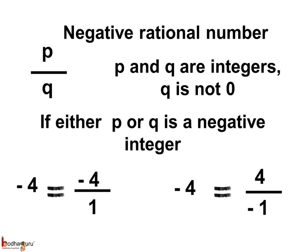So, here, minus 4, which can be expressed as minus 4 by 1 or as 4 by minus 1 is a negative rational number.